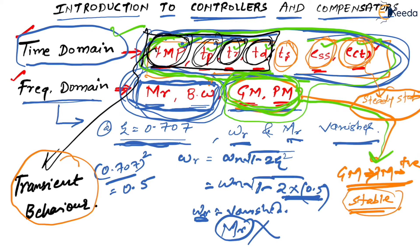By using either a controller or a compensator, we can get the best possible response. I will explain how this happens in the immediate next sessions, but for now just understand that by using controllers and compensators we can basically change some time domain or frequency domain parameters. Depending on what parameter is being changed, I will tell you what is a controller and what is a compensator.